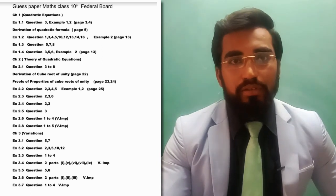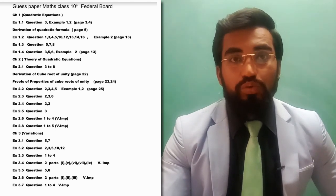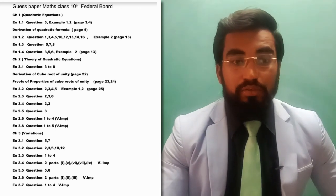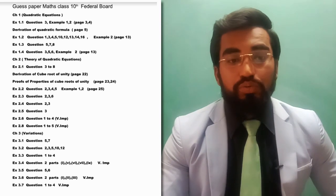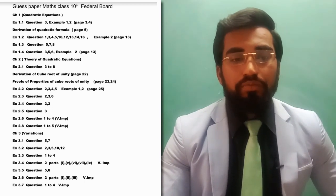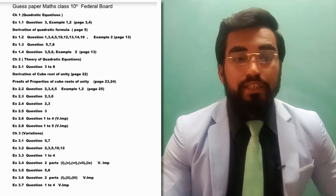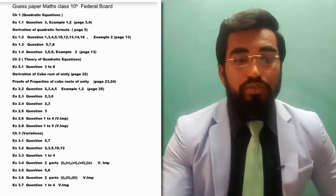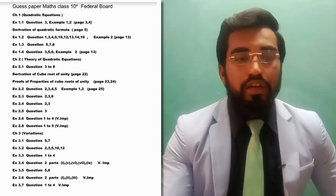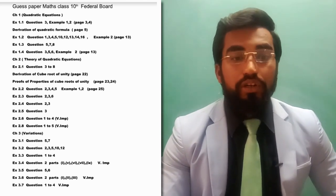Exercise 2.2: question number two, three, four, and five, plus example number one on page number 25. Next, Exercise 2.3: question number two, three, and six — these are very very important. Exercise 2.4: question two and three. Exercise 2.5: question number three. Exercise 2.6: question number one to four — these are very very important for the board exam.